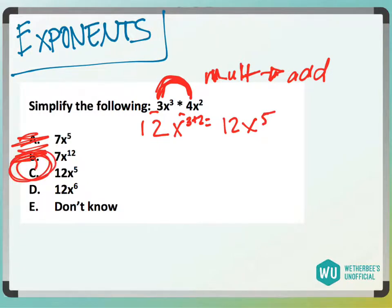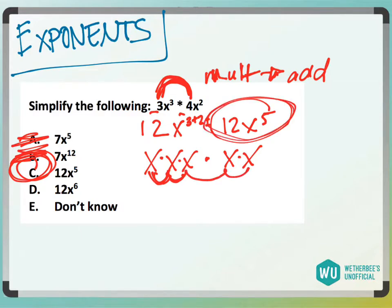So actually to map this out, think about it. What's x³? It's x times x times x. What's x²? It's x times x. And if I multiply those, I'd have 1, 2, 3, 4, 5 x's for 12x⁵, answer choice C.